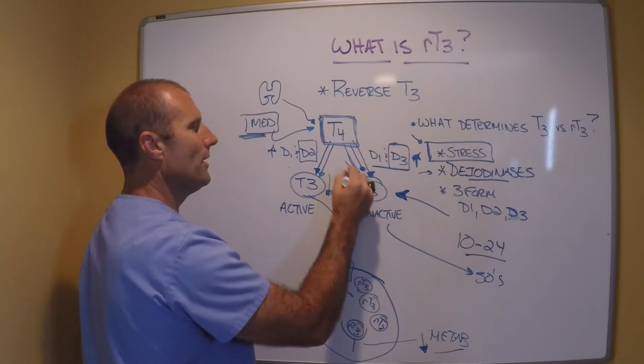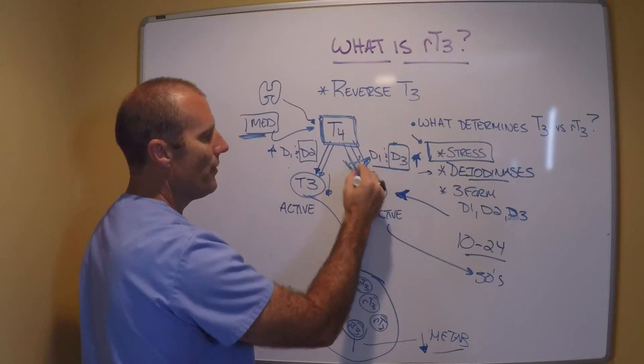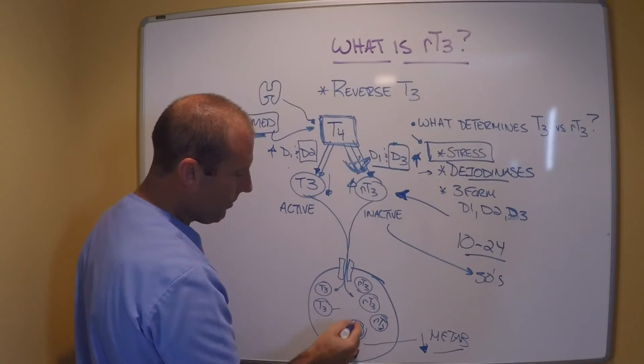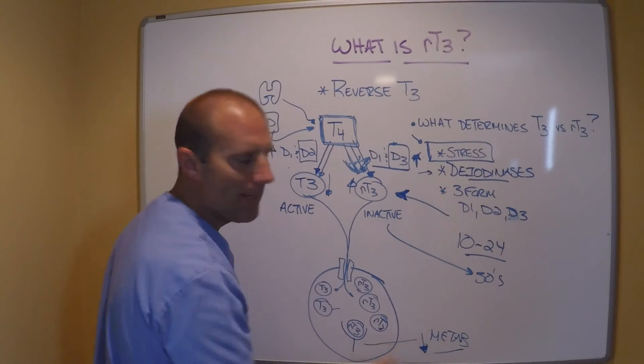So if her reverse T3 was up into the 30s and her doctor is giving her T4, what's happening is she's going down this pathway. Stress response is causing her to go down this pathway to make more reverse T3. That high levels of reverse T3 are competing for those thyroid receptors in here, and so her metabolism stinks.